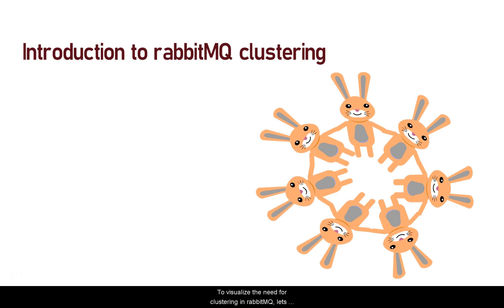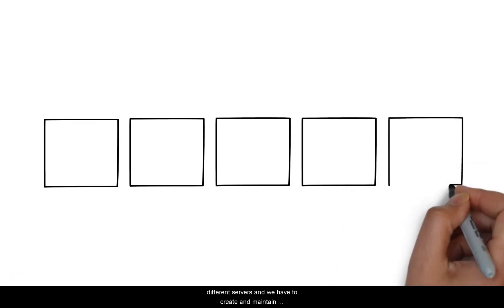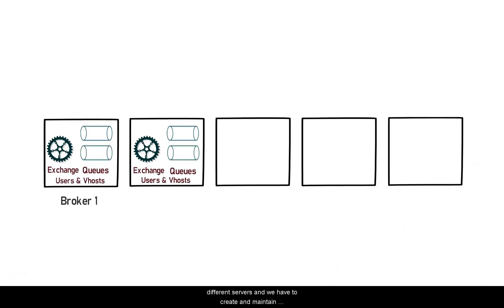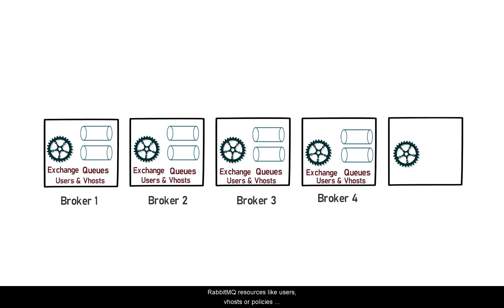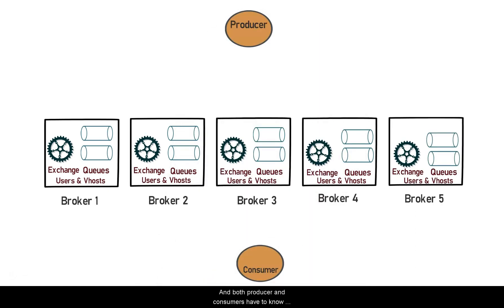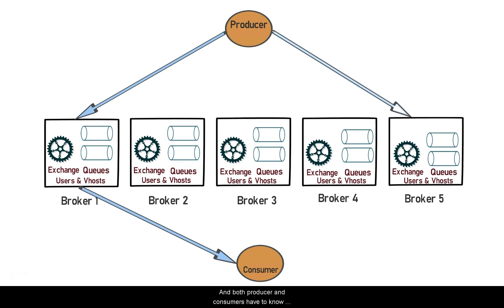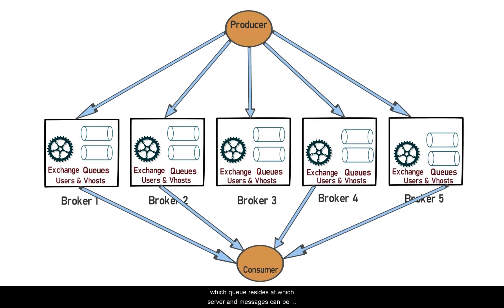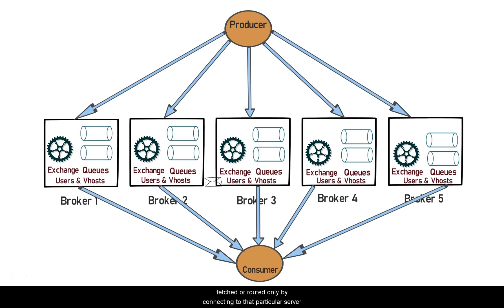To visualize the need for clustering in RabbitMQ, let's look into a use case. Consider a design of a message-oriented middleware which has a requirement to have 10 message queues, and each server hardware can withstand only 2 message queues. In this design, without clustering, we will have 5 different servers and we have to create and maintain RabbitMQ resources like users, vhosts and policies separately in these servers. Both producer and consumer have to know which queue resides on which server, and messages can be fetched or routed only by connecting to that particular server.